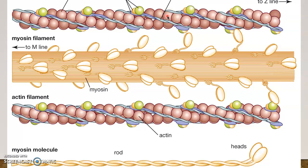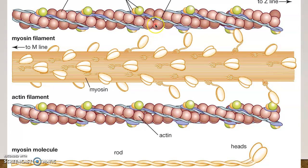I actually have two daughters, one's 22 and one's 6, so I have them spread out. These myosin heads over here represent their boyfriend, and my goal is to cover up and prevent these myosin heads from interacting with the actin sites here — physically contracting the muscle.